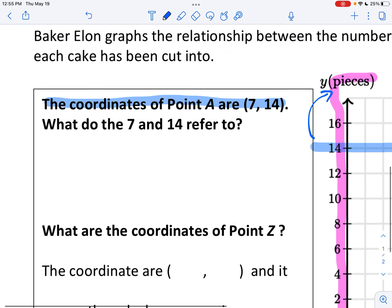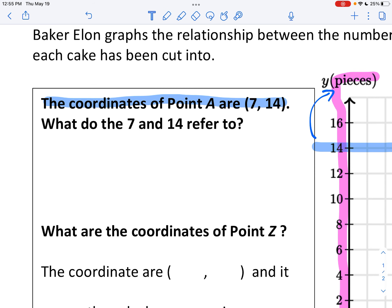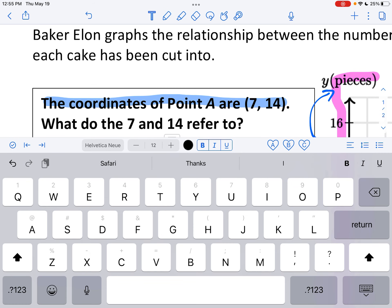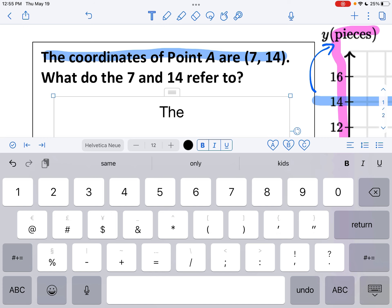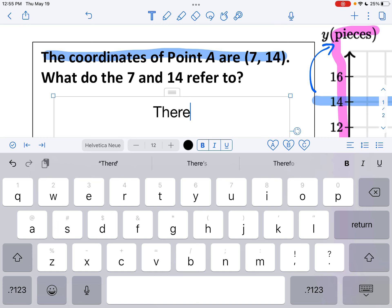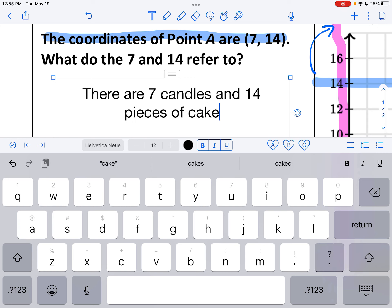So what do the 7 and 14 refer to? There are seven candles and 14 pieces of cake. Right?